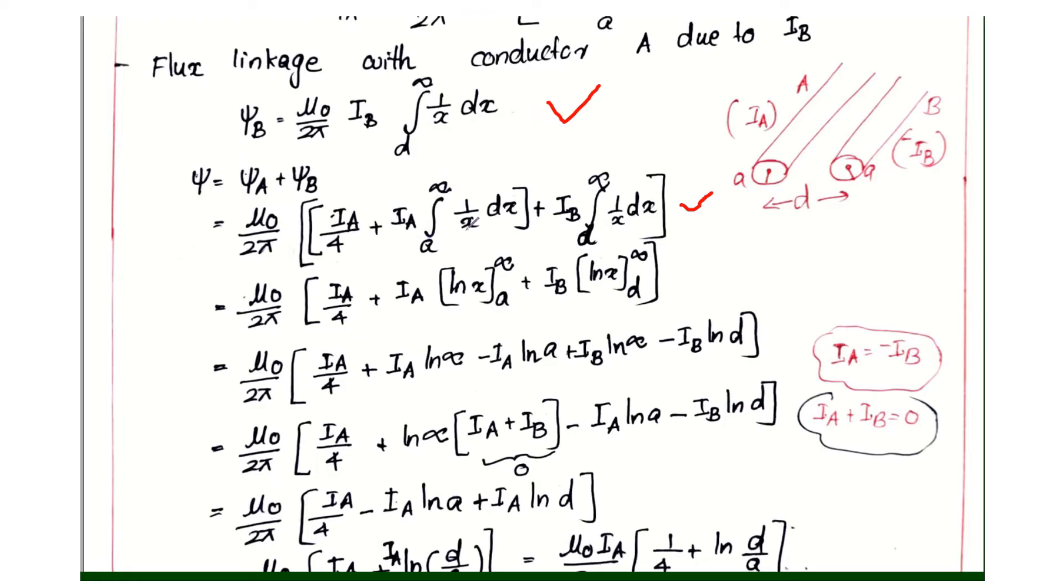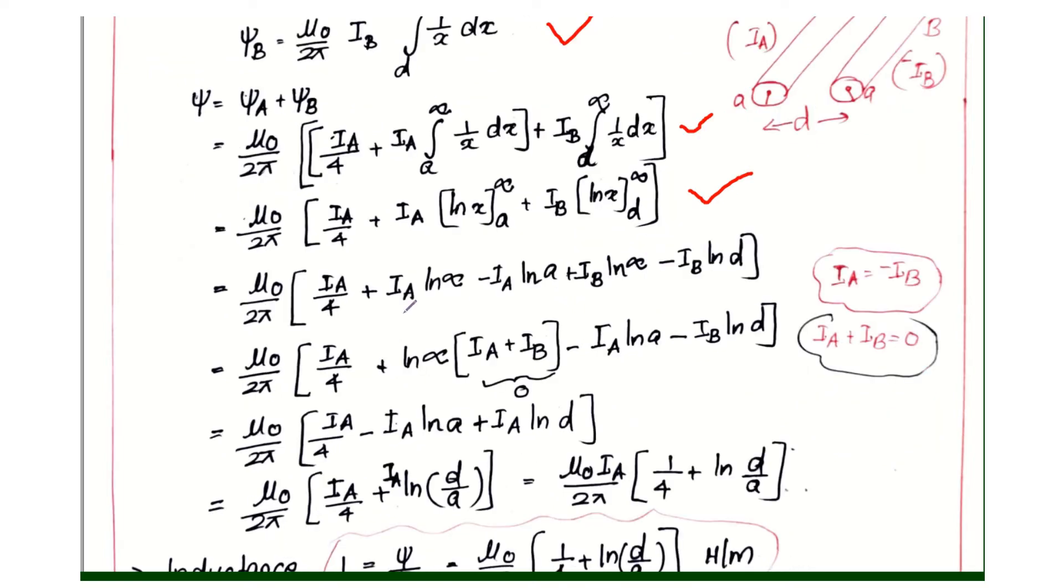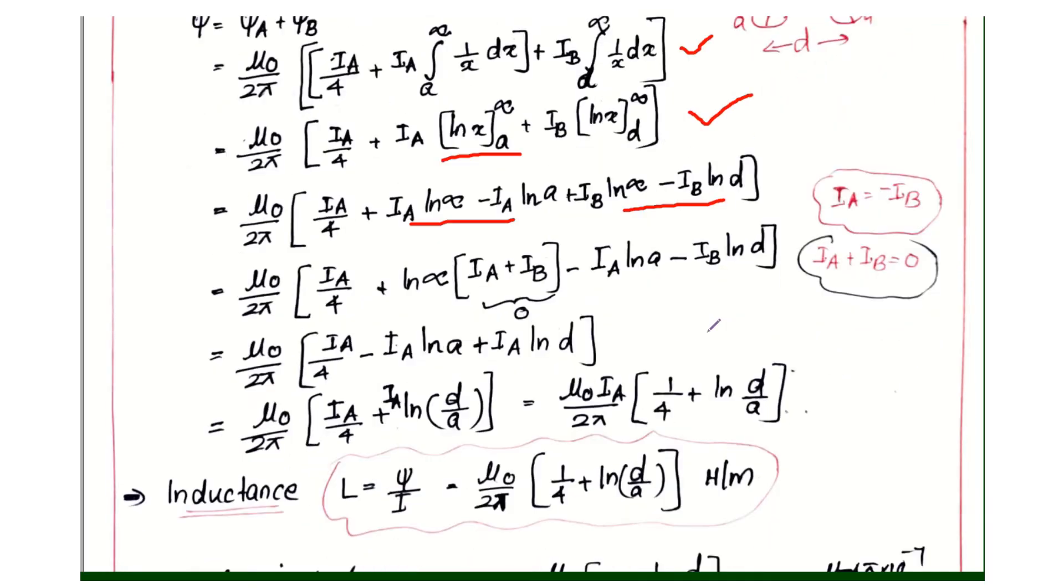Integral 1 by x dx is ln x. ln x A to infinity, similarly ln x D to infinity. Upper limit minus lower limit: ln infinity minus ln a, and ln infinity minus ln D.